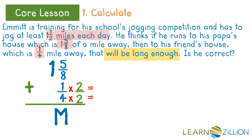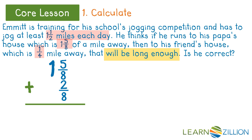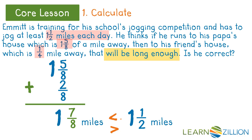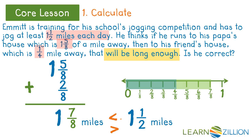We use the identity property to make the equivalent fraction of two-eighths, which replaces one-fourth to make common denominators. The sum is one and seven-eighths miles. Is one and seven-eighths miles less than or greater than Emmett's goal of one and a half miles? Since seven-eighths is larger than one-half, Emmett was correct.